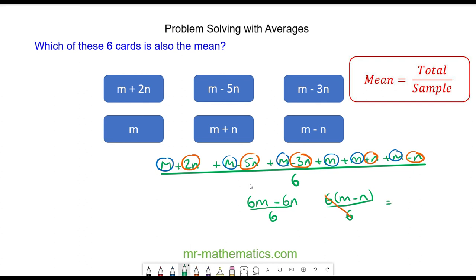So I'm left with the average of the six cards, which is m minus n. And that is this card here. Thank you.